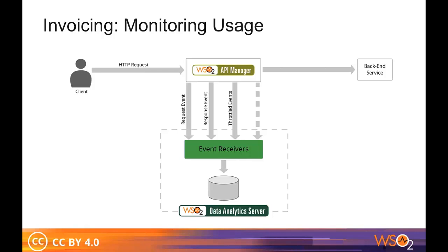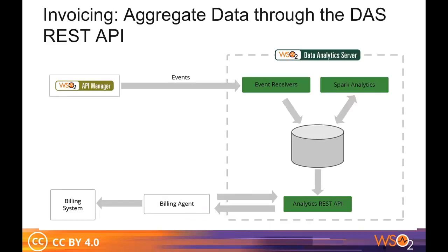There are two ways to configure API Manager for analytics. You can retrieve the statistics using the DAS REST API. API Manager publishes the event streams, and the DAS event receivers capture and process them. Apache Spark in DAS reads the event streams and generates summary data. This summary data is fed into the billing engine, and then invoices are generated. We generate the summary data based on our summary data plan, and we take this data from the DAS REST API and feed it to the billing engine.